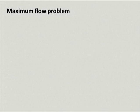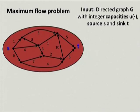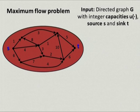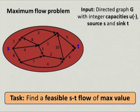Let's start with the definition of the problem we will be concerned with in this talk: the maximum flow problem. In this problem, we are given a directed graph G with integer capacities on the arcs, and we have two special vertices, source S and sink T. Our task is to find the feasible ST flow of maximum value in this graph.